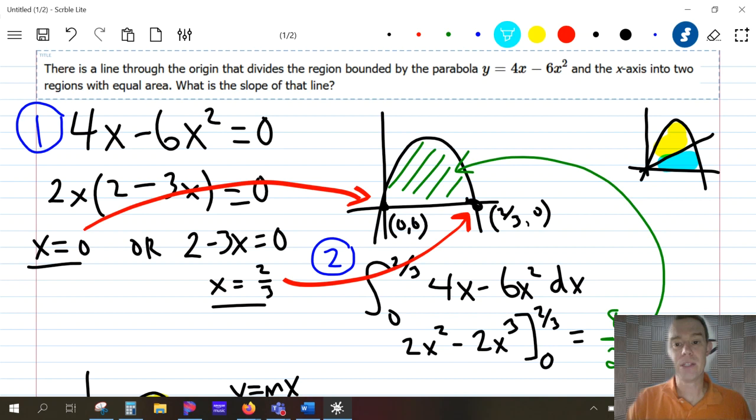First we need to find the total area. In order to find that total area, I'm going to have to integrate under the parabola. I'm not worried about the line just yet. I'm trying to find the total area. And so in order to find that area under the parabola, I need to find out where those two x-intercepts are. That's pretty easy to do. That's just algebra. I just set the equation, the parabolic equation equal to zero, do a little bit of factoring and solve for x. And I get two values, x equals zero and x equals two thirds.